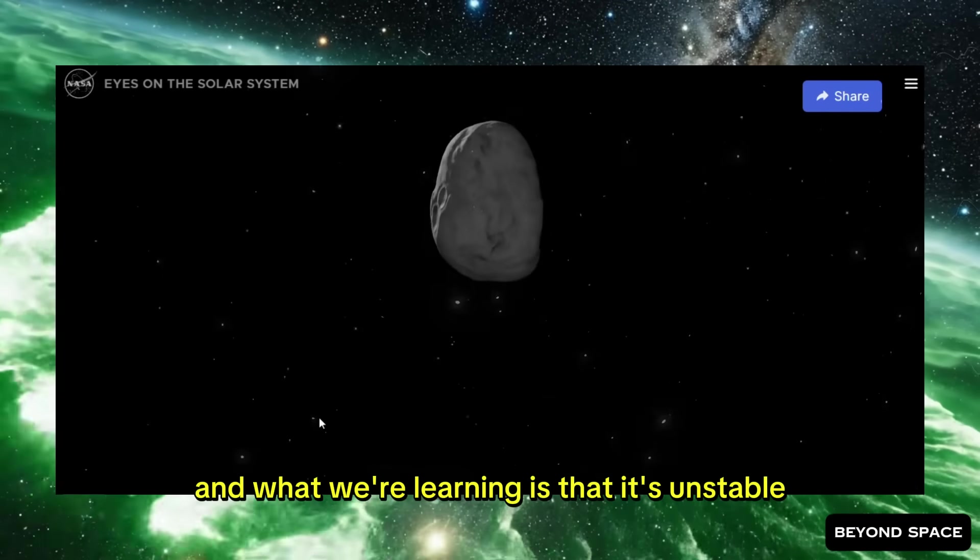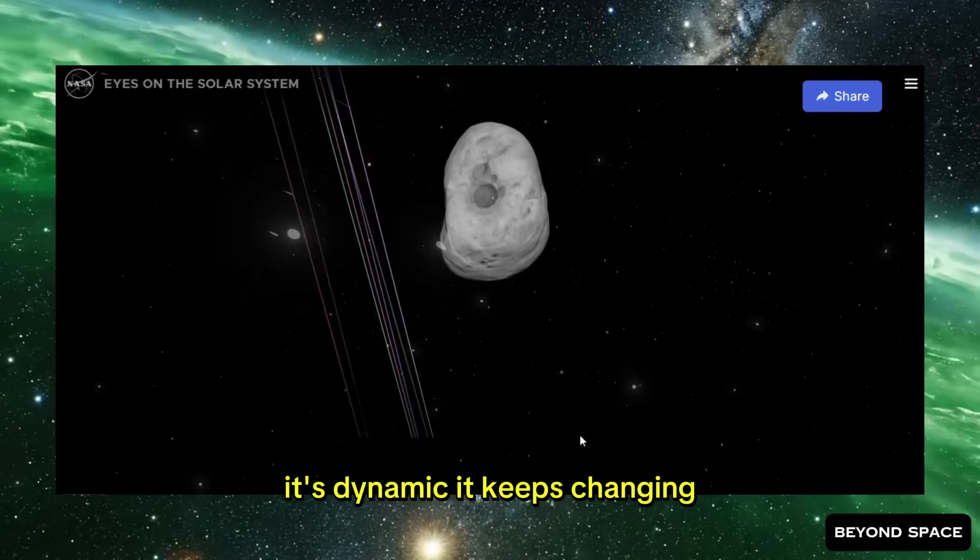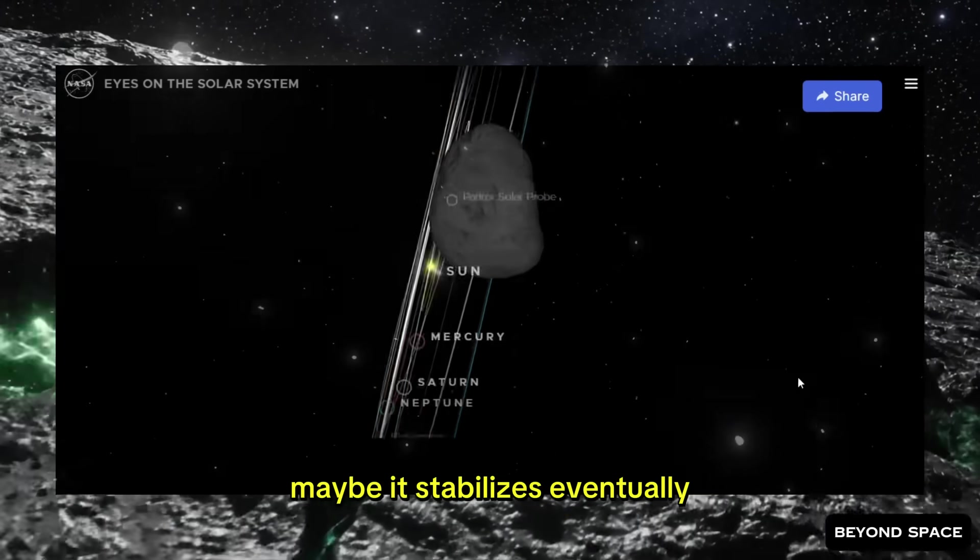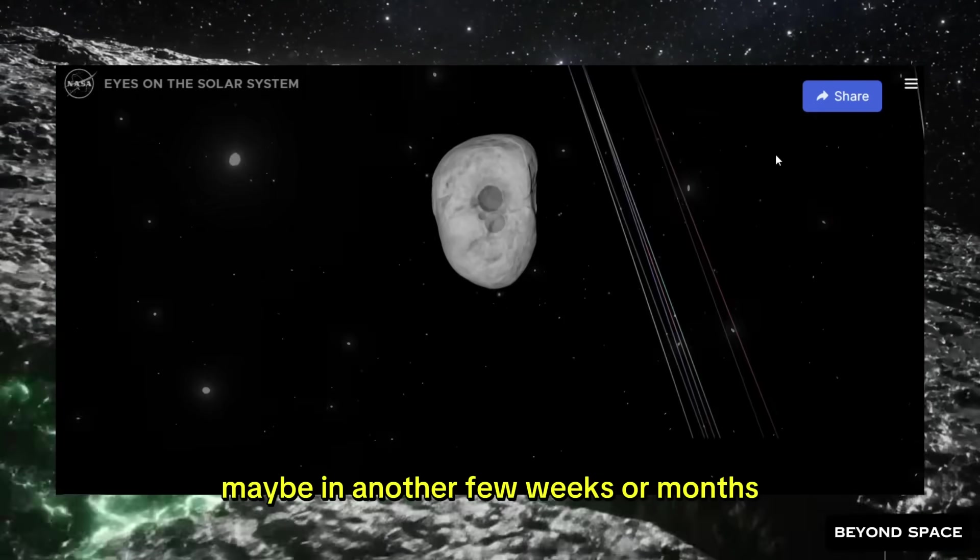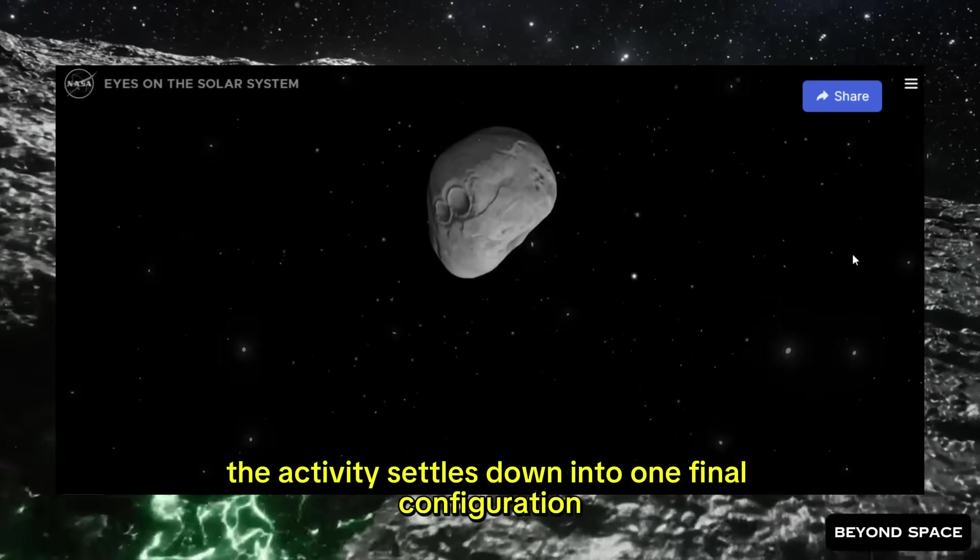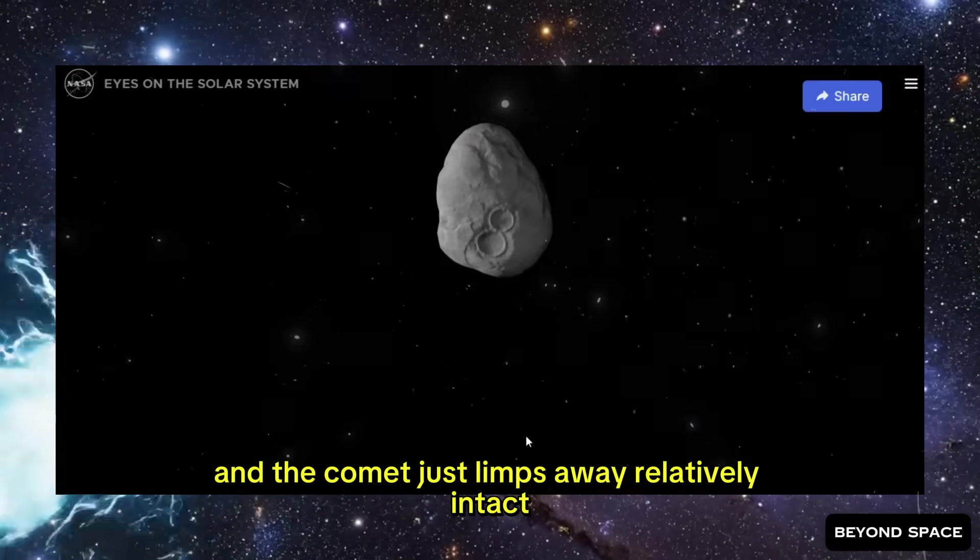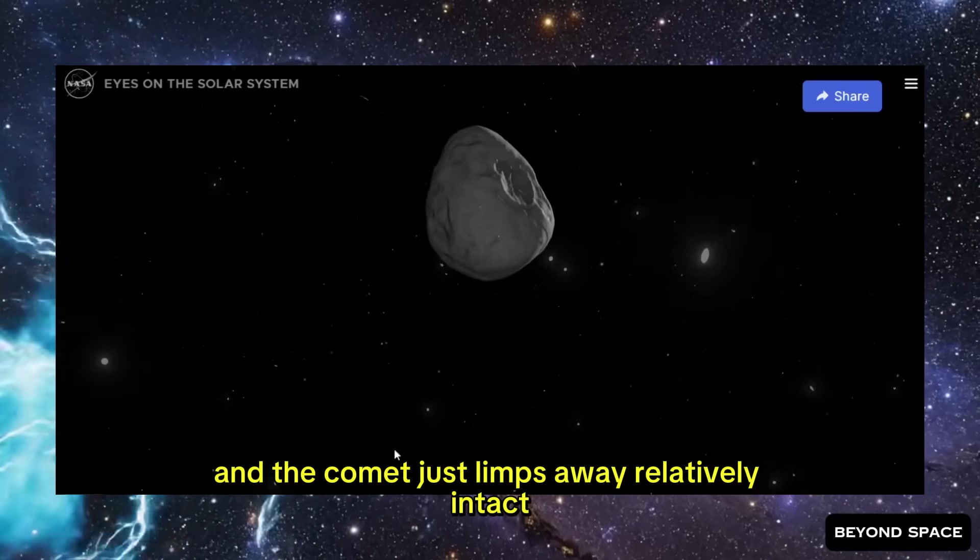And what we're learning is that it's unstable. It's dynamic. It keeps changing. Maybe it stabilizes eventually. Maybe in another few weeks or months, the activity settles down into one final configuration, and the comet just limps away relatively intact, slowly fading as it heads back out into interstellar space.